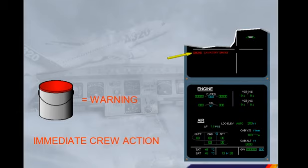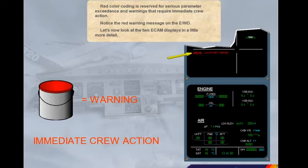Red colour coding is reserved for serious parameter exceedance and warnings that require immediate crew action. Notice the red warning message on the engine warning display.